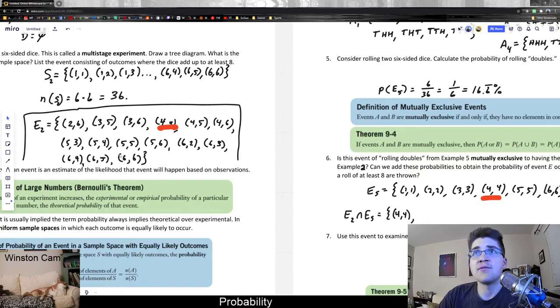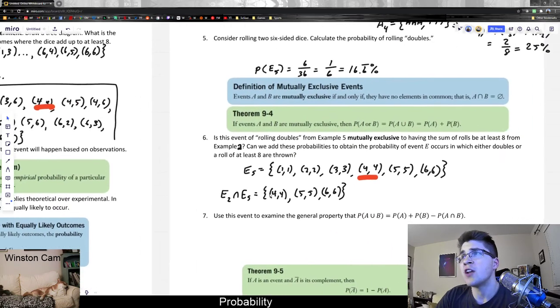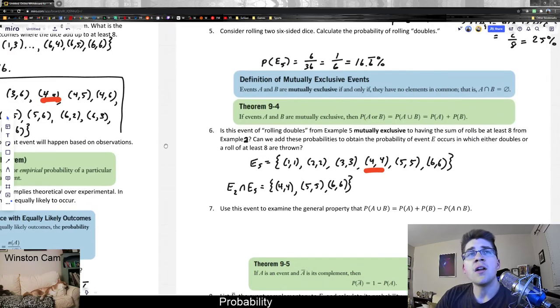We also have 5, 5 and 6, 6, right? Because 5, 5 and 6, 6 also obviously add up to eight or more. And so there are three events in the intersection. And all this means is that we say these are not mutually exclusive.